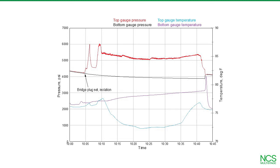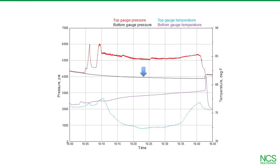Frack zone pressure clearly indicates major events during the stage simulation. First, setting the bridge plug to isolate the frack zone from the wellbore below. Then, pressure testing the isolation bridge plug in the wellbore above the sleeve. Next, shifting the sleeve to open the frack ports. Then breaking down the formation. And when the frack is away, unsetting the bridge plug, allowing pressure in the wellbore to equalize before moving to the next sleeve. Note that the bottom pressure is unaffected by the fracturing pressure — that's how you know there was no communication with the previous stages below.